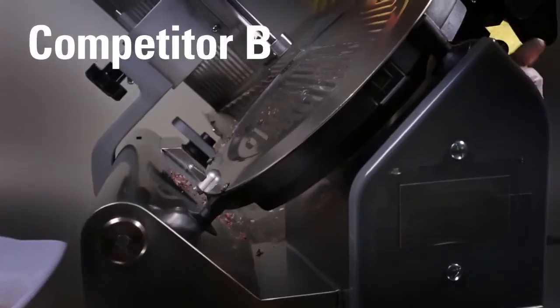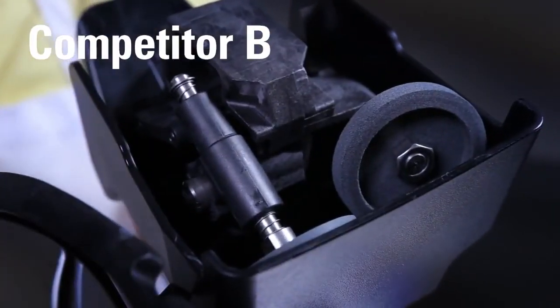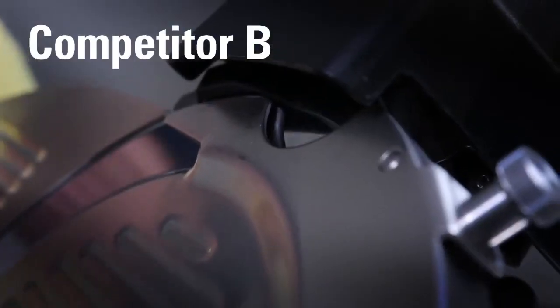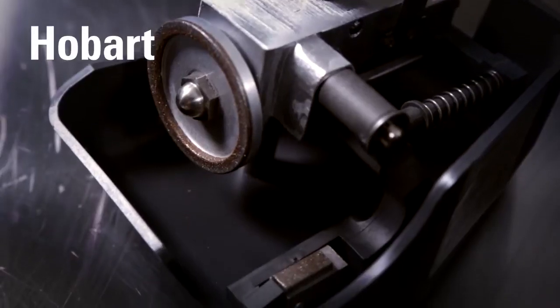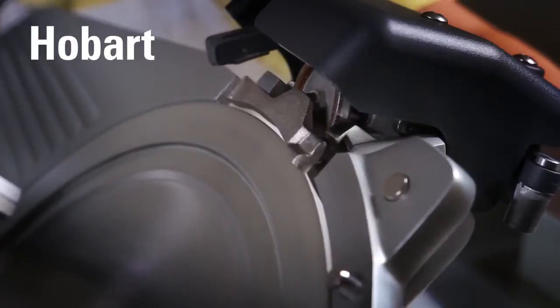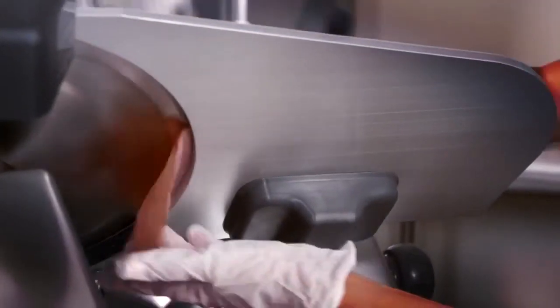To sharpen their knives, the competition uses a ceramic stone that absorbs food and oils. You have to wait 24 hours after cleaning to use it again. Hobart's Super Hard Borazon Sharpening Stone won't absorb moisture, so you can wash it and use it immediately. And it comes with a lifetime replacement warranty.